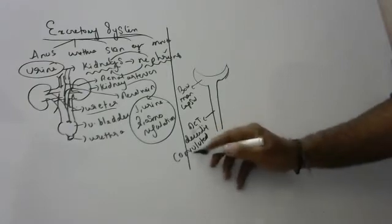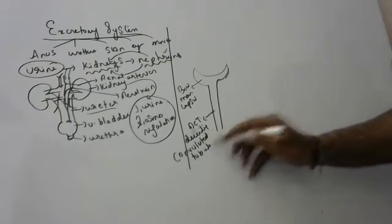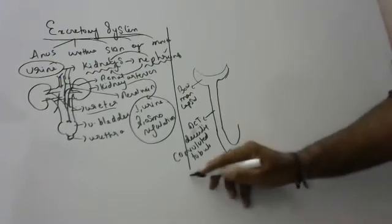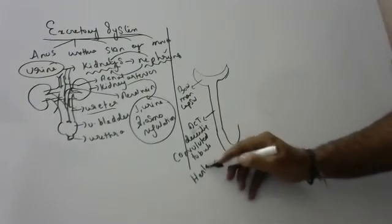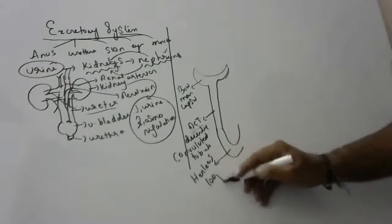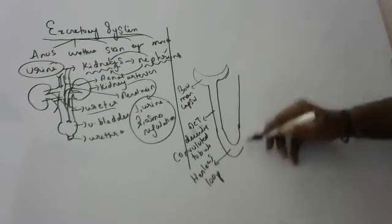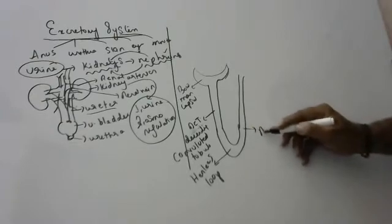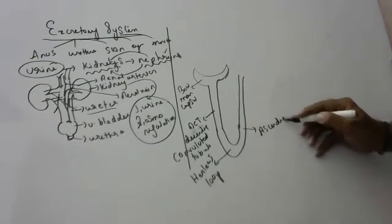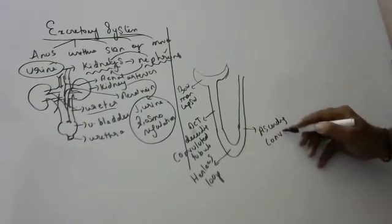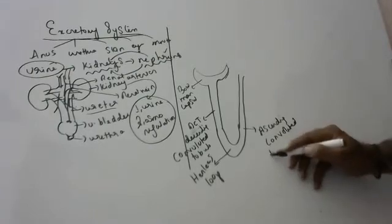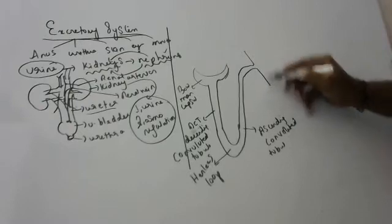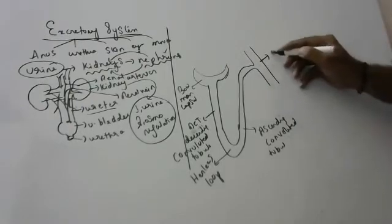This small tube bends like a hairpin - that's why it is called Henle's loop. It goes down and then comes back up. The ascending limb goes up again. And when it reaches the top, this small tube goes and joins collectively - that is called the collecting duct.